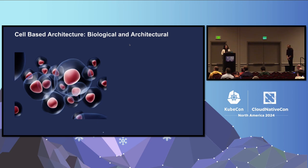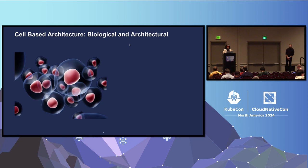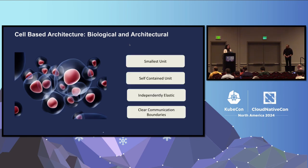Let's go to the biological cell, because that's where the concept emerged — it is the beginning of everything. A cell is the smallest unit of life; every cell contains certain organelles, and every cell is responsible for consumption, production, and its entire metabolism. That's how it sustains its state and interacts with the outside ecosystem, and that exactly replicates to cell-based architecture. Any component you use should be the smallest unit — don't try to put everything in a cell. It is a self-contained unit, independently elastic, with clear communication boundaries — these are guiding principles.